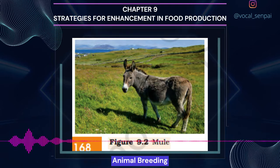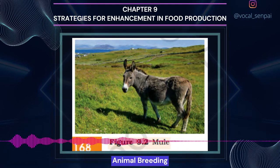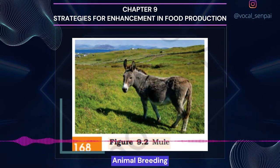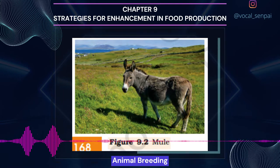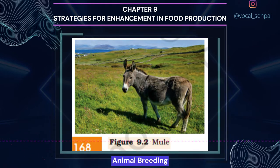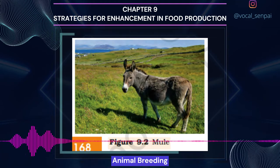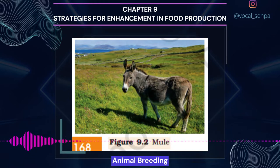Crossbreeding: In this method, superior males of one breed are mated with superior females of another breed. Crossbreeding allows the desirable qualities of two different breeds to be combined. The progeny hybrid animals may themselves be used for commercial production. Alternatively, they may be subjected to some form of inbreeding and selection to develop new stable breeds that may be superior to the existing breeds. Many new animal breeds have been developed by this approach. Hisardale is a new breed of sheep developed in Punjab by crossing Bikaneri Ewes and Merino Rams.